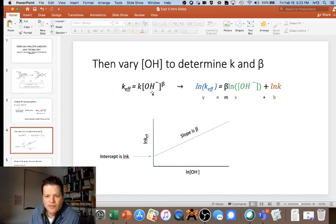If we have two different hydroxide concentrations, we'll have two different k_eff values. We can take the logarithm of both sides, so ln(k_eff) equals beta times ln[OH⁻] plus ln k. In other words, y equals mx plus b.